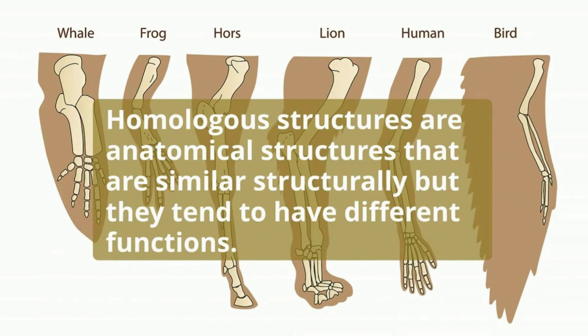Homologous structures are anatomical structures that are similar structurally but tend to have different functions. Let's take a look at a couple of examples.